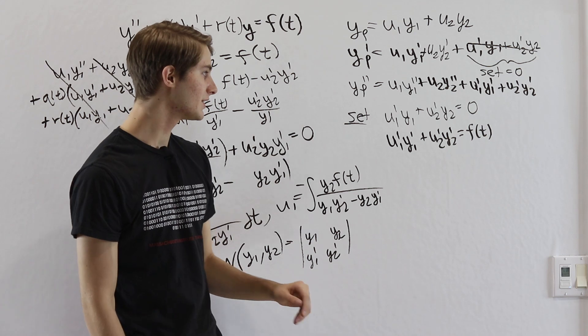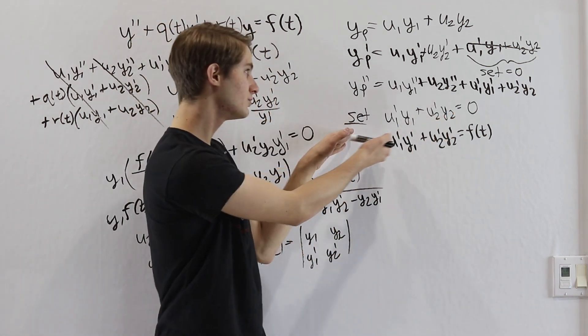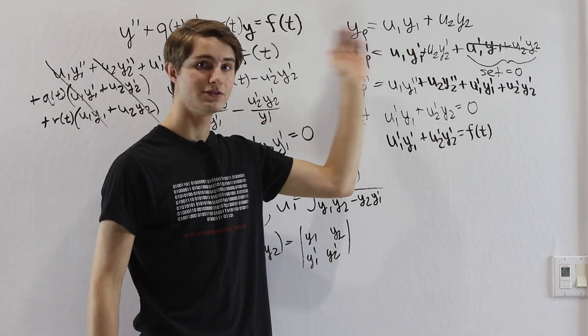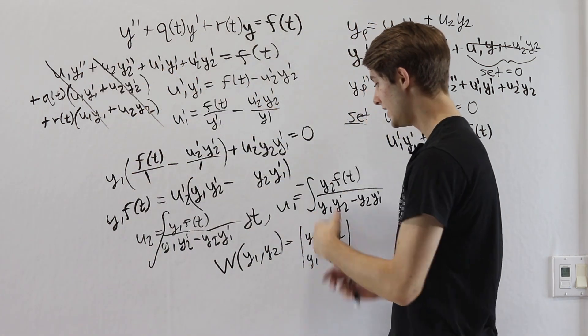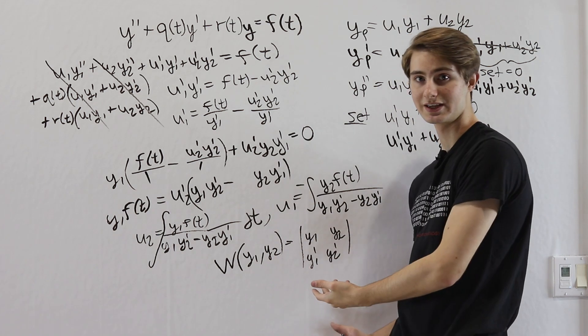Because we have two of those, it allows us to set an additional constraint here that makes the derivatives a lot easier for us. We can go through that equation, cancel out all that nice stuff, and then solve for our answers just like this.